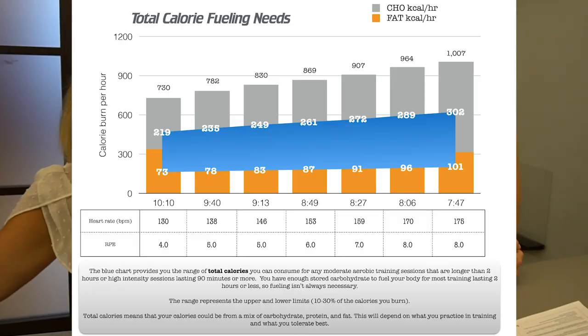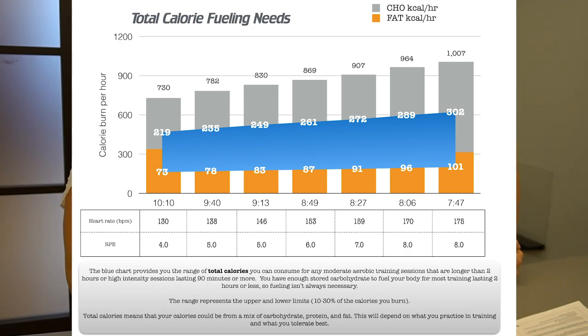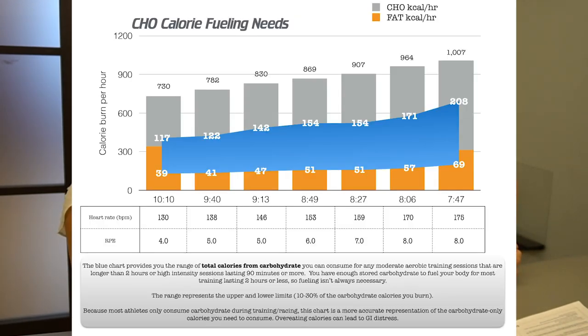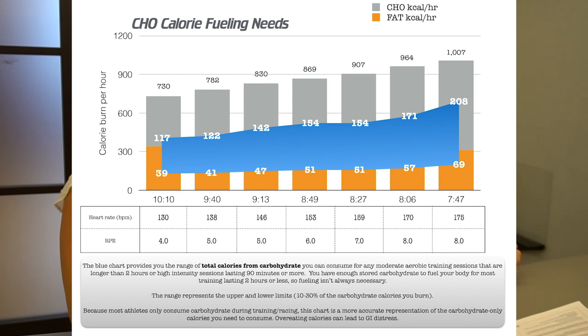Based on how your body is utilizing calories, I make a chart for what your calorie needs are during long runs and racing. There are two charts — the first is for fuel sources containing protein and fat in addition to carbohydrates, and the second is the range of calories based on your race or long run pace. The lower number you can never go below, and the top number you should not exceed — it's important not to overeat during workouts.